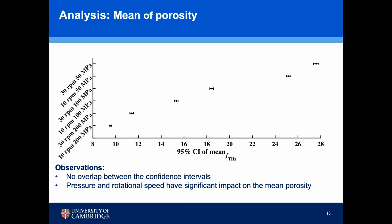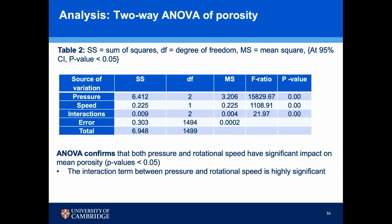We also plotted the 95% confidence interval for the mean, and here you can clearly see that there is no overlap between the confidence intervals, which shows that speed and compaction pressure have a significant influence on porosity. We then performed two-way ANOVA analysis, which unsurprisingly buttressed our previous observations — that pressure, speed, and their interaction significantly affect the porosity.